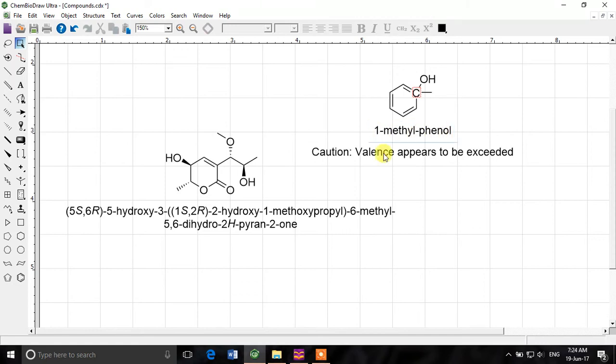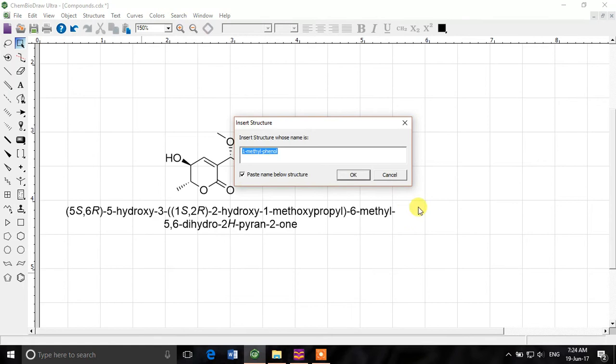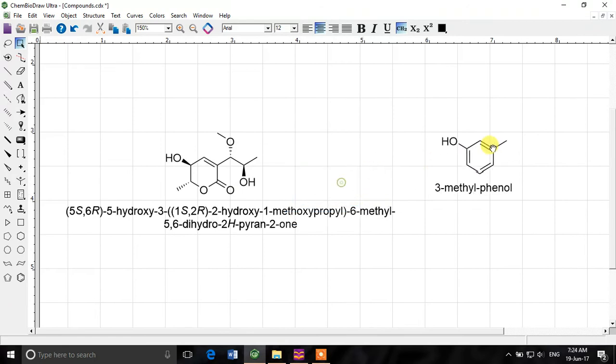One methylphenol caution valence appears to be exceeded. So I don't think we can create one methylphenol because the valence of this carbon is invalid now. So I'll delete it. We'll probably go to structure again. Convert name to structure and we can see 3-methylphenol. Now look. It has drawn 3-methylphenol.